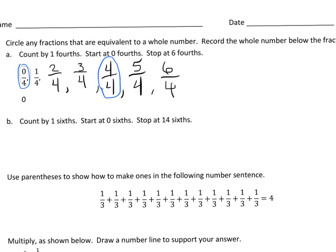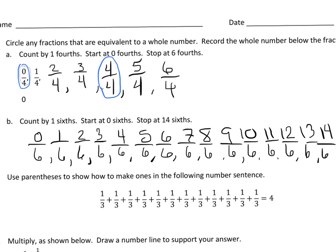Now let's look at B: count by 6ths, start at 0/6, stop at 14/6. You might want to pause your video and get this written down. I have all these 6ths; I did stop at 14 like it asked. I want to circle numbers that are whole numbers. 0/6 is 0. 6/6 is a whole number. But there's also one more on here — can you find the other time that 6 fits perfectly into the numerator? 12/6. 12 divided by 6 is 2. All the rest will have some fractional remainder, or mixed fraction.